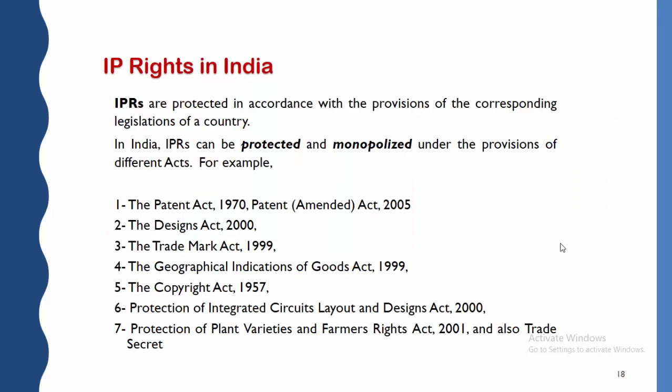IP rights in India are protected in accordance with the provisions of the corresponding legislation. In India, IPR can be protected and monopolized under the provisions of different acts, such as: the Patent Act of 1970, the Design Act of 2000, the Trademark Act of 1999, the Geographical Indications of Goods Act of 1999, the Copyright Act of 1957, the Integrated Circuit Layout and Design Act of 2000, and the Protection of Plant Varieties and Farmers' Rights Act of 2001.